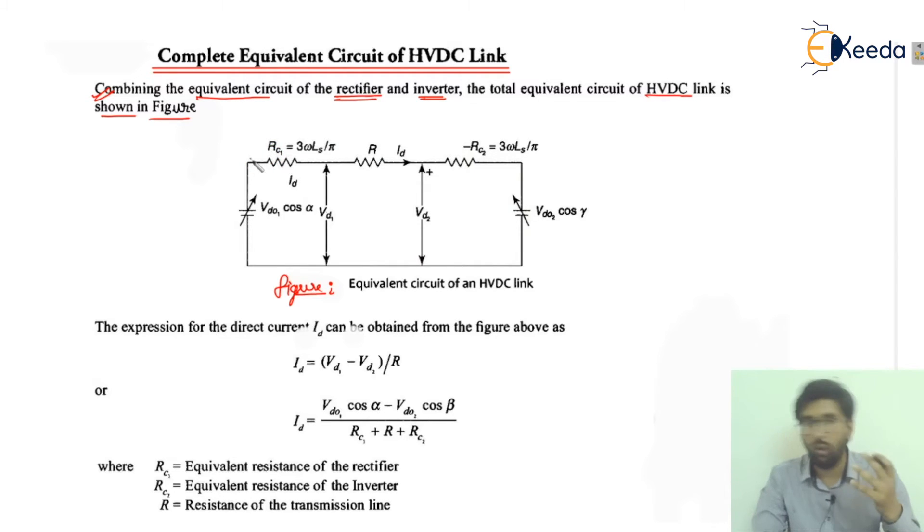Now the expression for the direct current, that ID. ID is representing the direct current, that is the DC voltage value, which can be obtained from the figure. ID is equal to VD1 minus VD2 upon R.